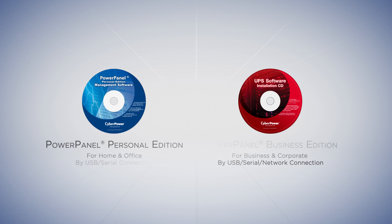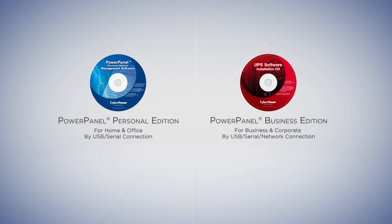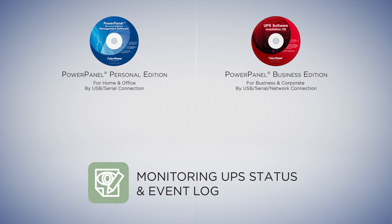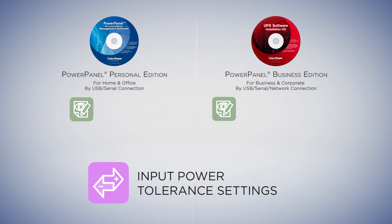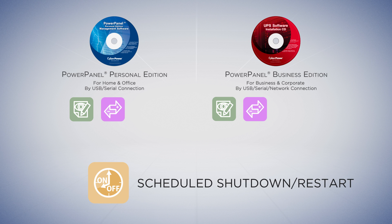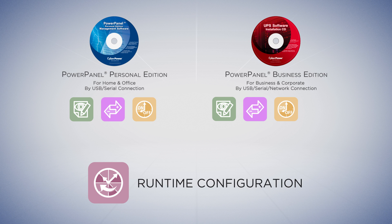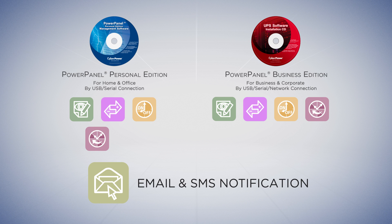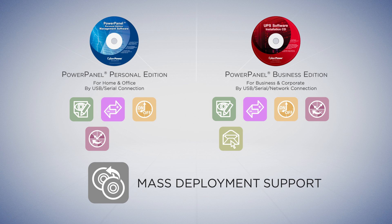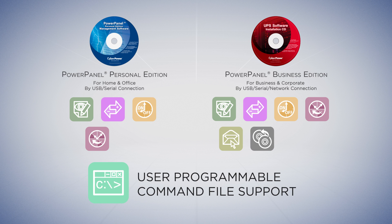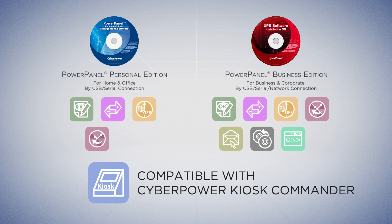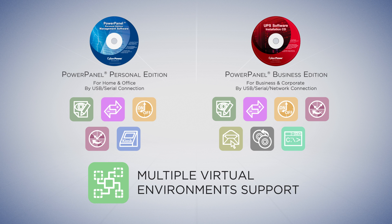Here is a recap of how CyberPower PowerPanel software can be a better choice for you: monitoring UPS status and event log, input power tolerance settings, scheduled shutdown and restart, runtime configuration, email and SMS notification, mass deployment support, user programmable command file support, compatible with CyberPower Kiosk Commander, and multiple virtual environment support.